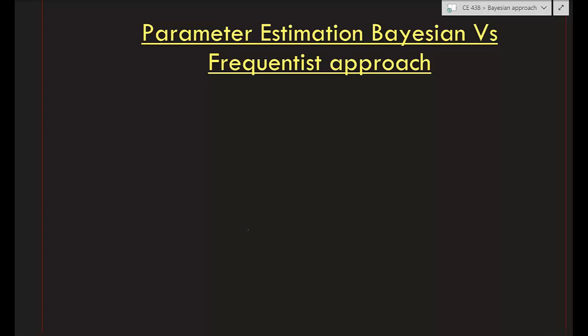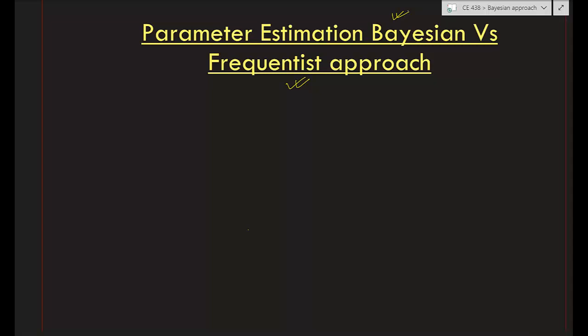There are two approaches for parameter estimation. One approach is the frequentist approach, one example being the maximum likelihood method, and another approach is the Bayesian approach. In this video we will discuss how we can use the Bayesian method to estimate the parameter of any given model.